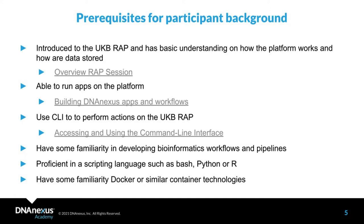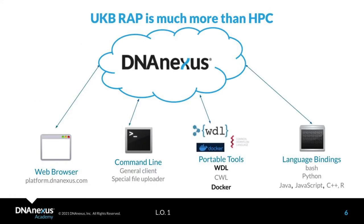Having some familiarity with Docker or similar container technologies is also helpful. As a quick overview, remember that UKBRAP is much more than just access to high-performance computing. We have the web browser UI, which includes running apps and the cohort browser for exploration. We have command line tools. And what we're focusing on today are portable tools — meaning if you write it once, you can run it in a variety of different environments, including WDL. CWL and Docker are also supported, as well as language bindings for Bash, Python, etc.